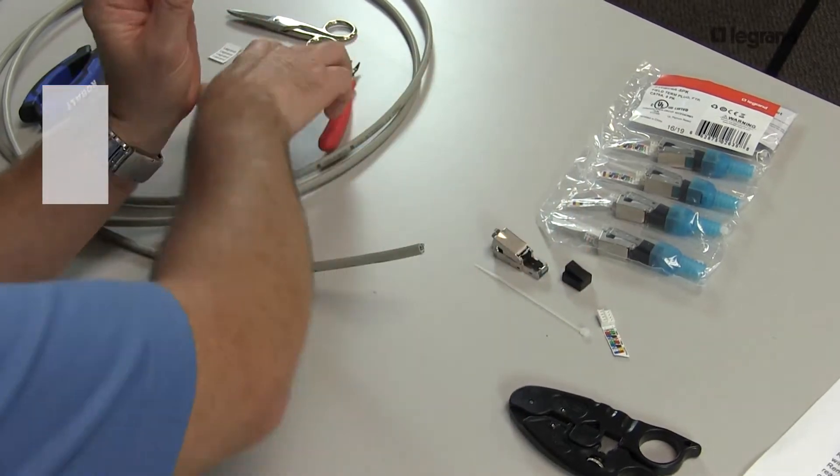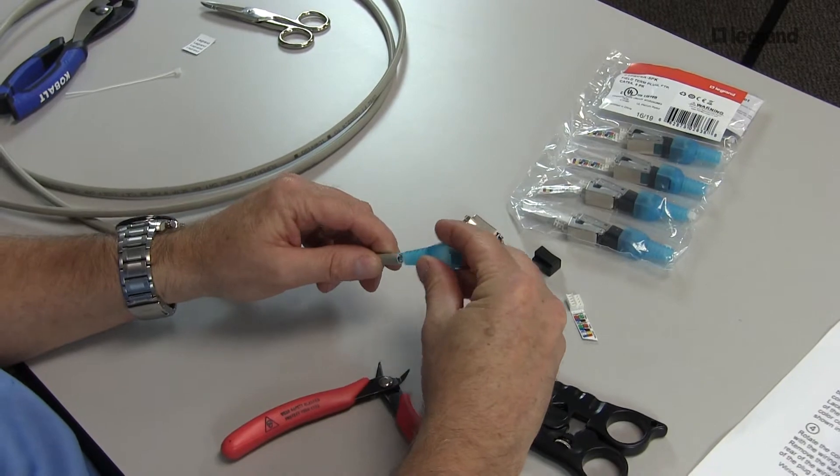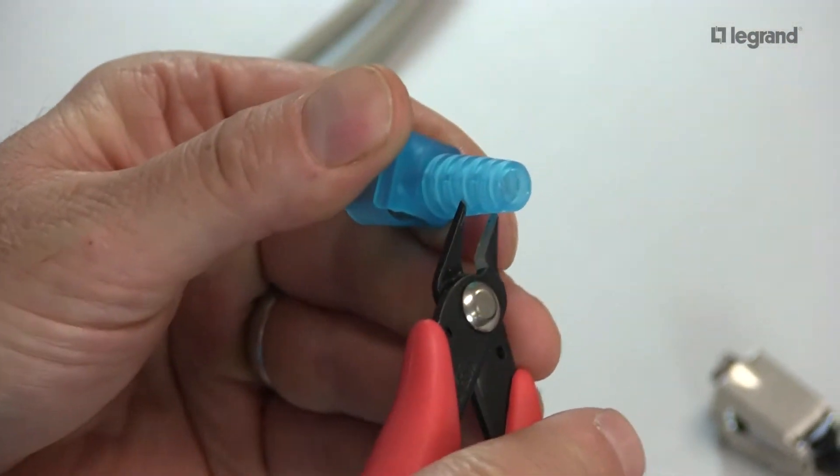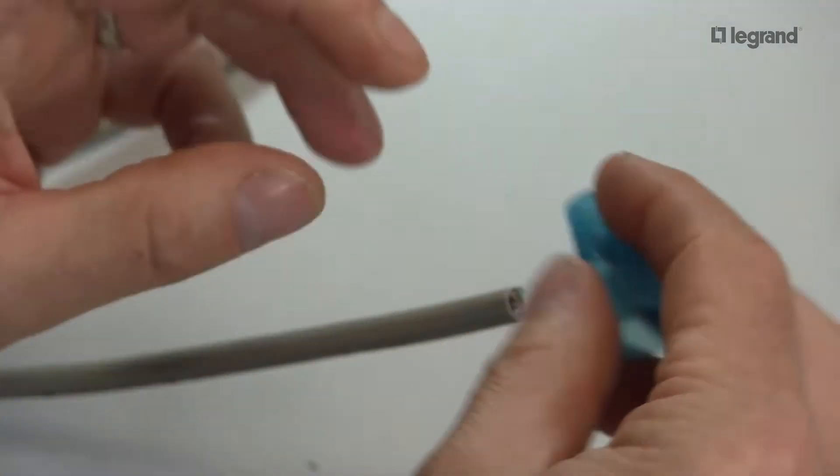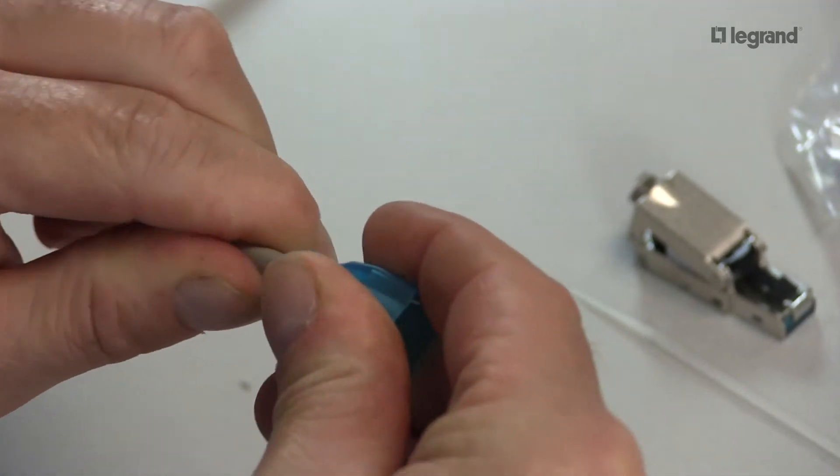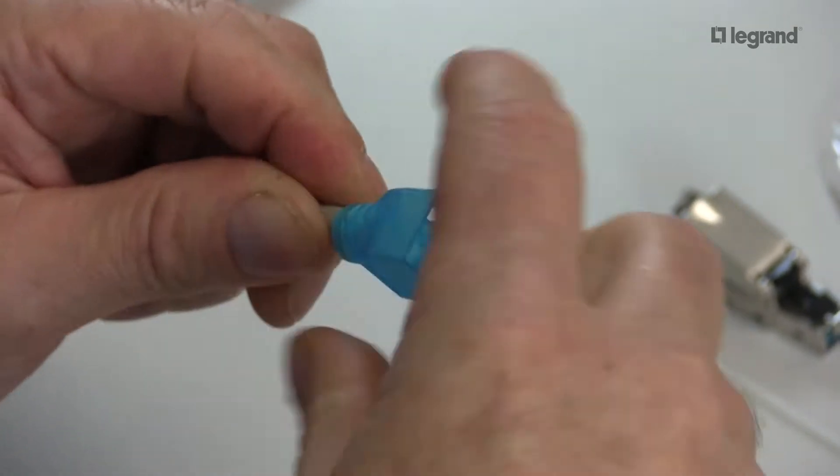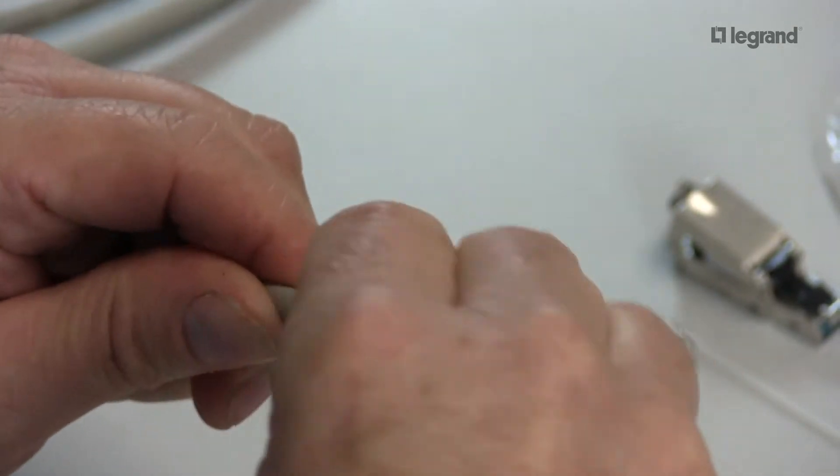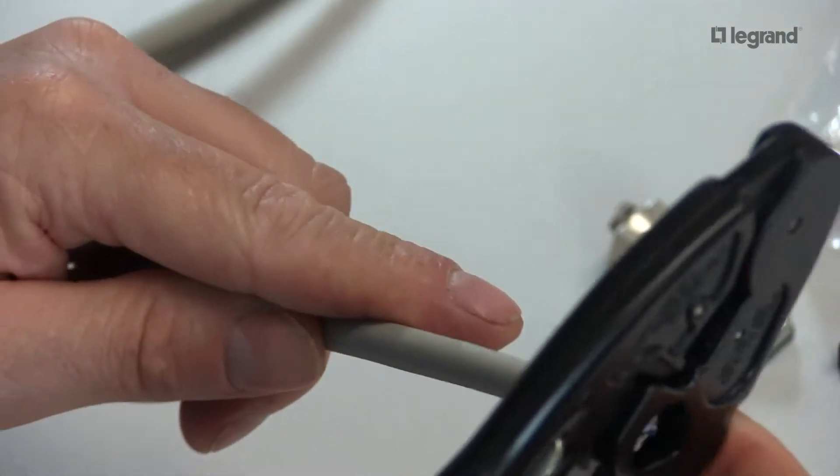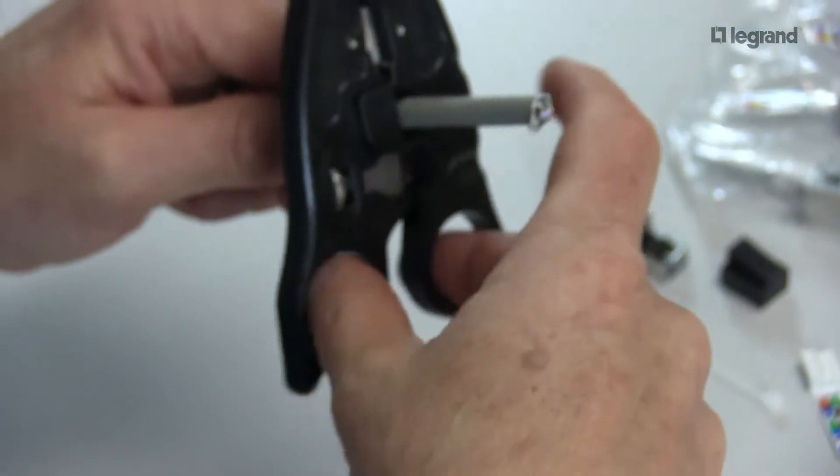So the first thing I'm going to do is put on my boot and it's a one size boot. So if you're using 6A of course, I'm going to have to trim that down a little. I'll slide my boot through the cable. I'm going to strip back about two inches of cable. And of course the instruction sheets will show you this.